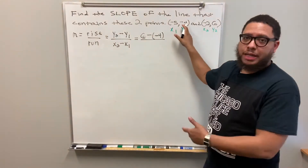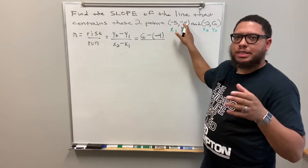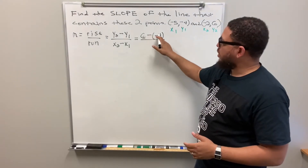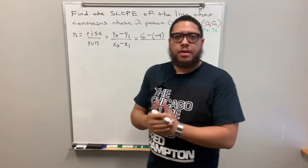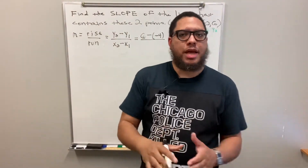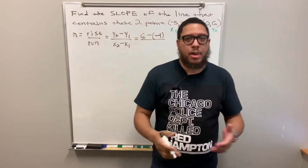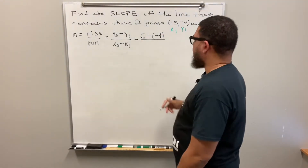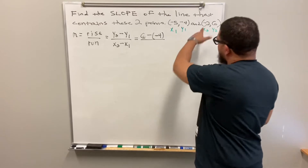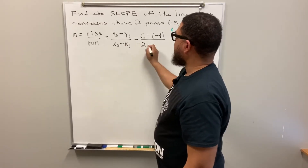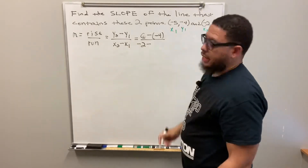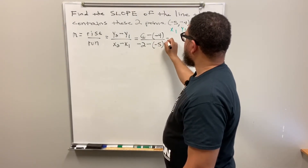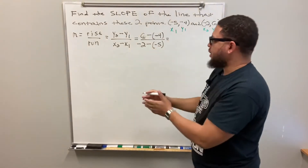Minus signs and negative signs are the same thing — they represent the same thing. So you need two minus signs, and that's a double negative. A double negative becomes addition every time — minus minus means addition. So in the numerator we end up doing six plus four. In the denominator, x₂ is negative two, then minus, then x₁ is negative five — same scenario, both minus signs needed: negative two minus negative five.